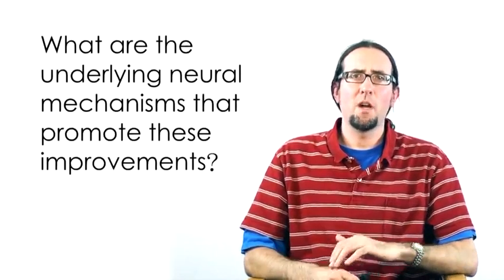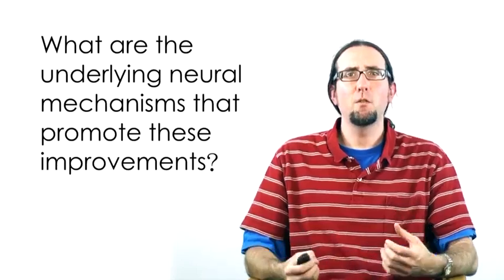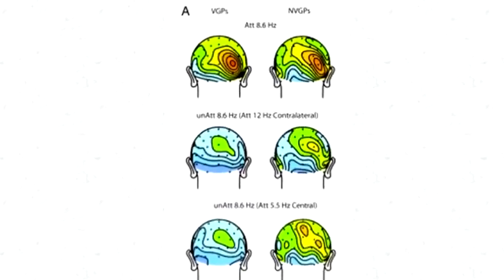One recent study by Jody Mishra and Steve Hilliard at UC San Diego actually used EEG measuring neural activity. Many of you have probably seen the little electrodes that can go on the outside of people's head measuring neural activity and asking what types of neural signatures are different in action game players versus non-action game players. The task that they had subjects do while they were recording their brain activity was a pretty difficult task.